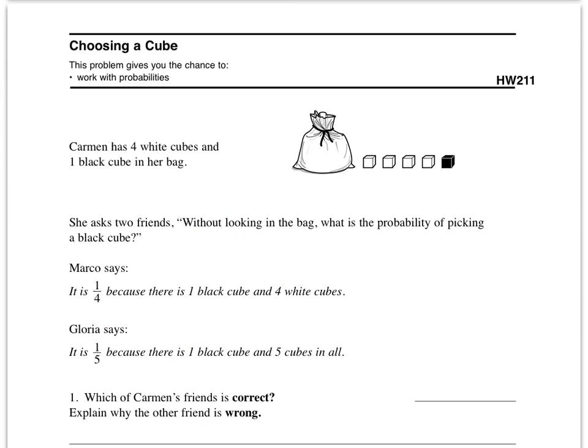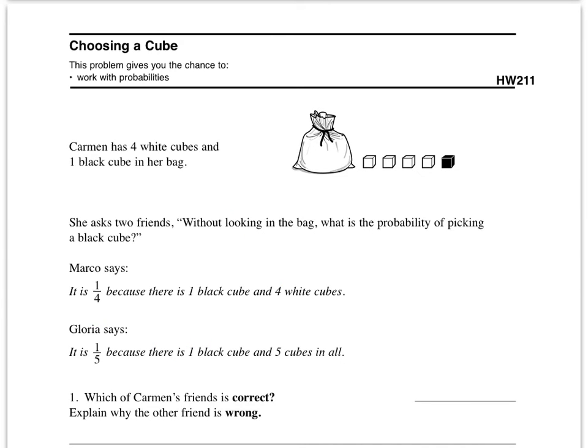And here we are on the back side. This one is called choosing a cube. This problem gives you the chance to work with probabilities. So Carmen has four white cubes and one black cube in her bag. There's her bag, four white cubes, one black cube.